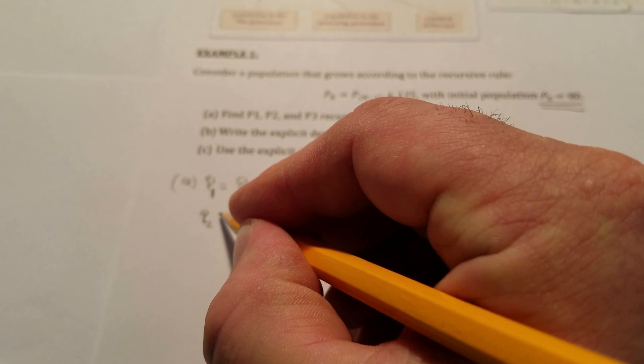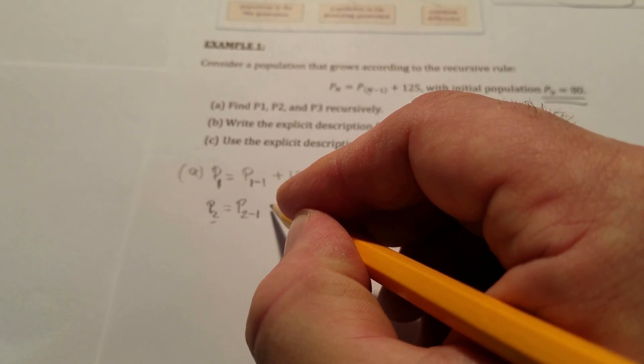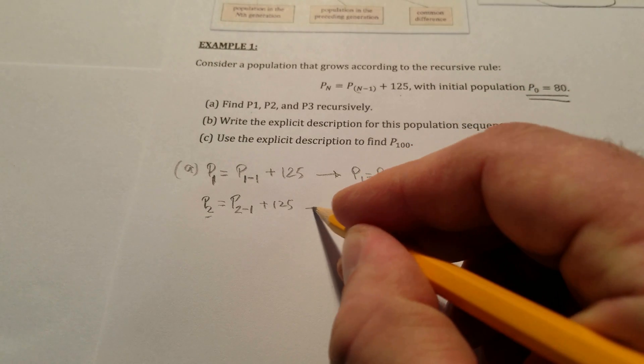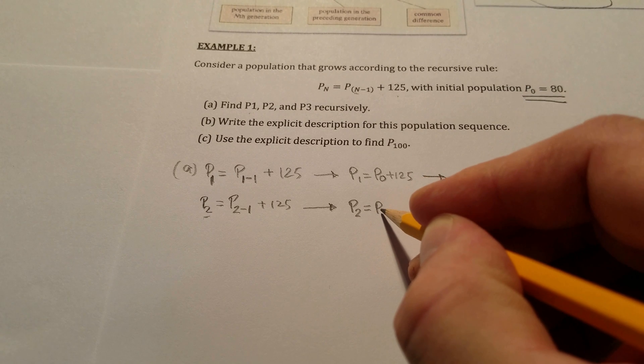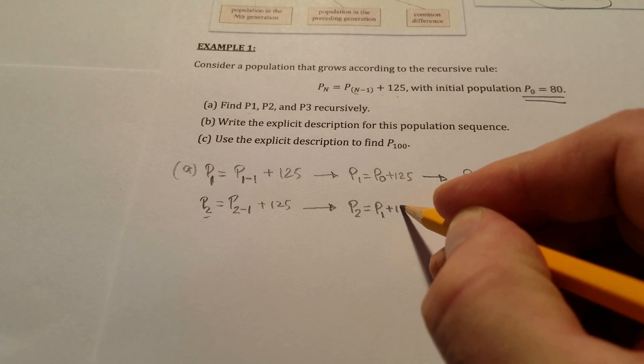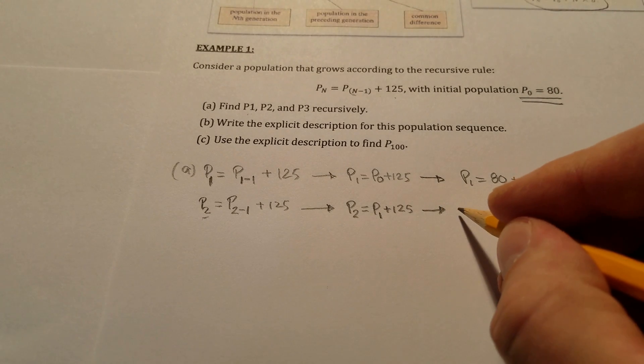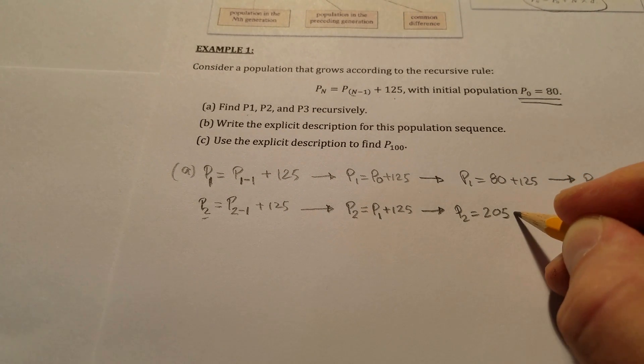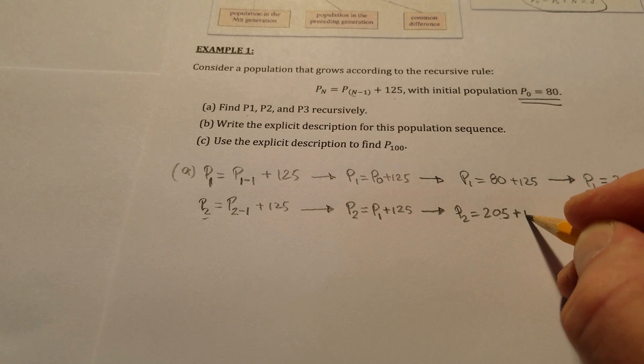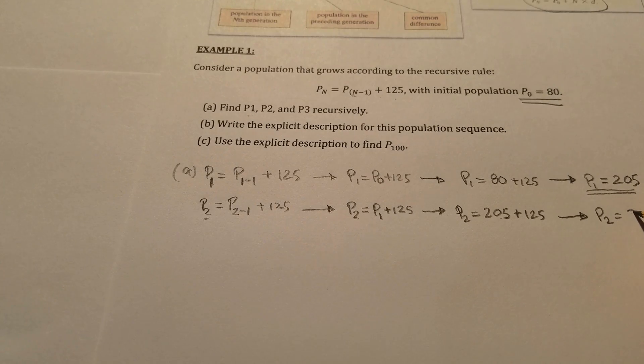Now when we're asked to find the population of generation two, again we take the n, which is two, subtract one from it, and add the common difference. This means we are looking for population two to be the sum of population of generation one plus 125. We can reference the population of generation one. So P₂ equals 205 plus 125, which means P₂ equals 330.